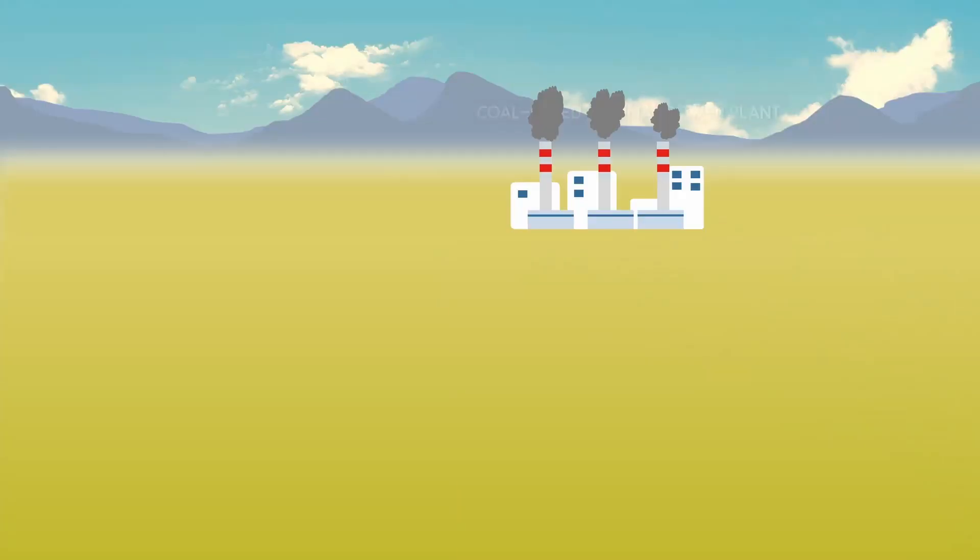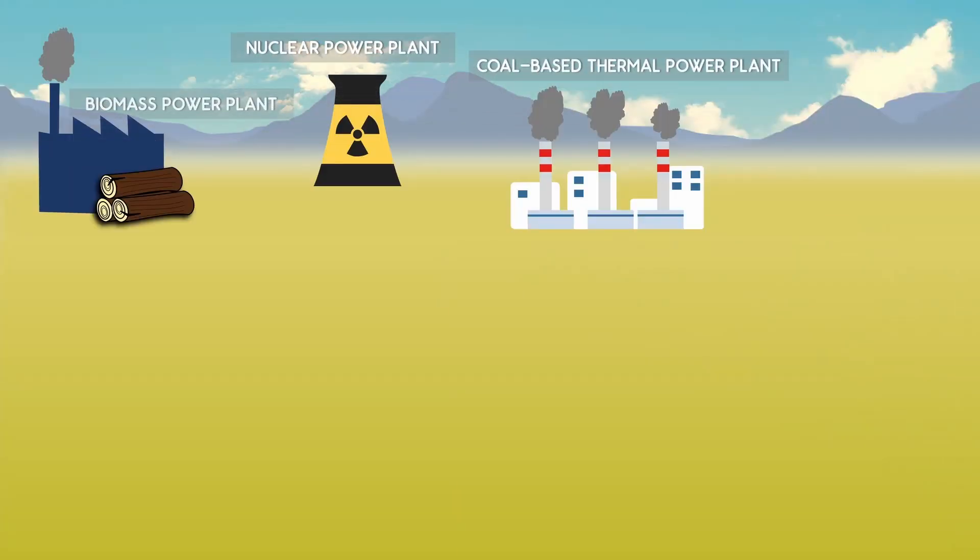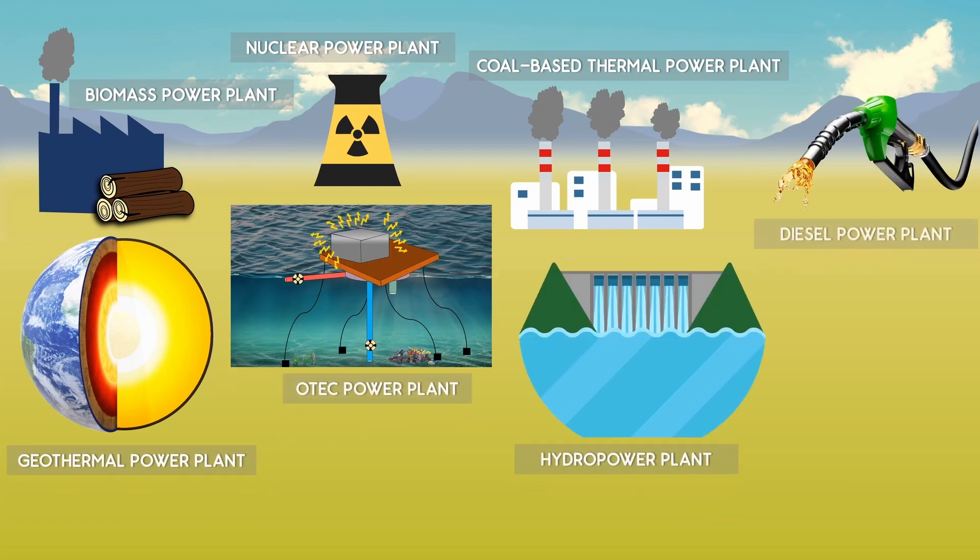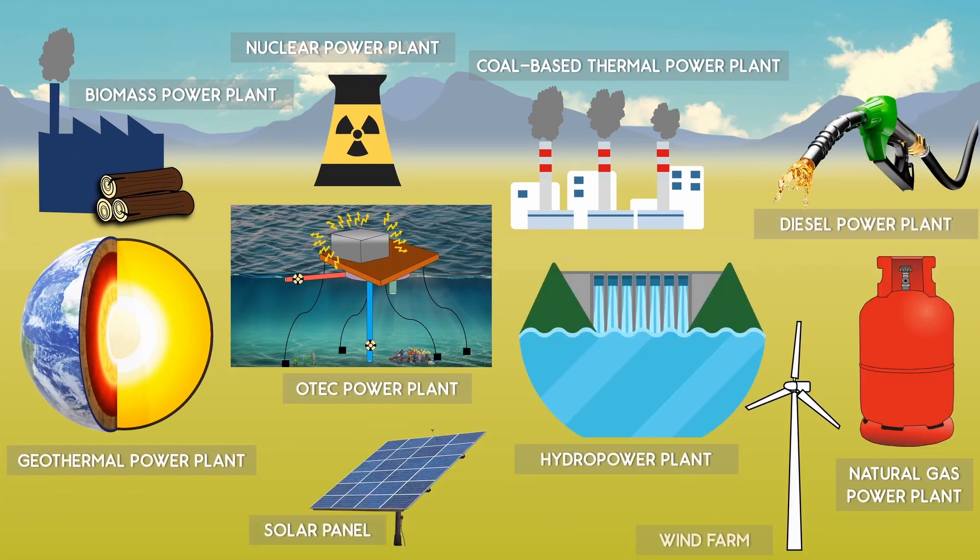To meet all these demands, the electricity is generated from power plants such as thermal, nuclear, biomass, geothermal, OTEC, hydro, diesel power plants, solar panels and wind farms. Since demand is not constant, we don't want all these power plants to operate throughout the day.